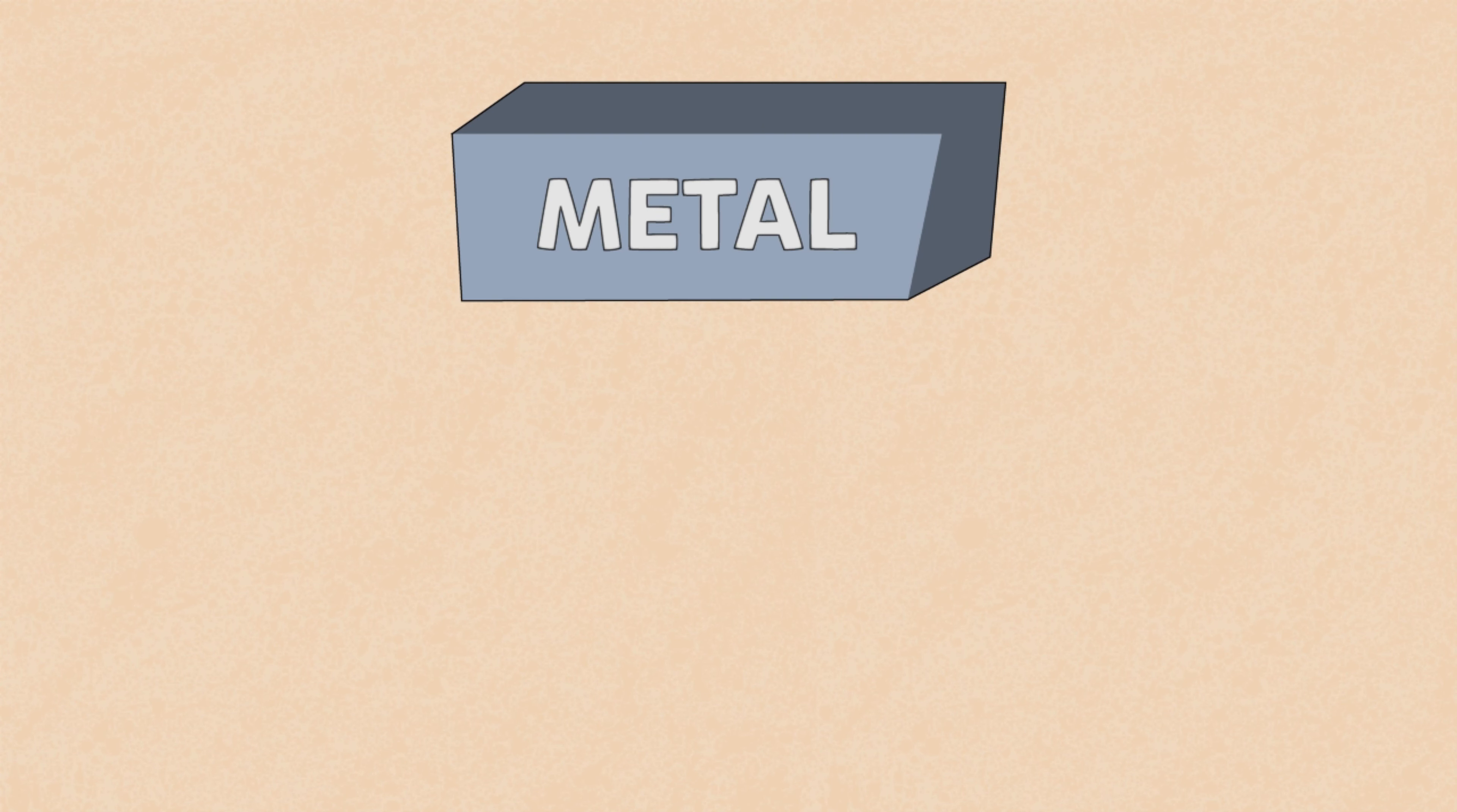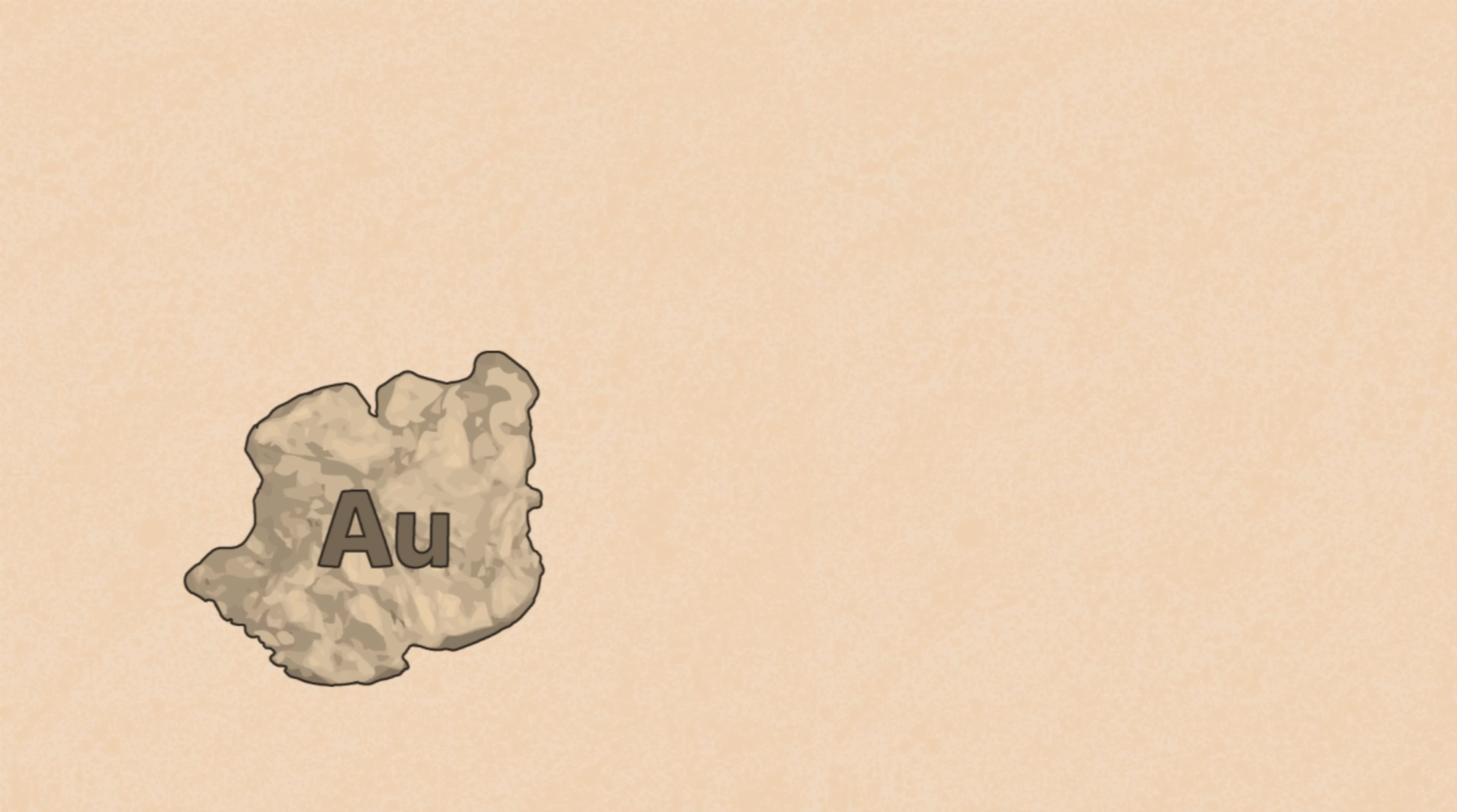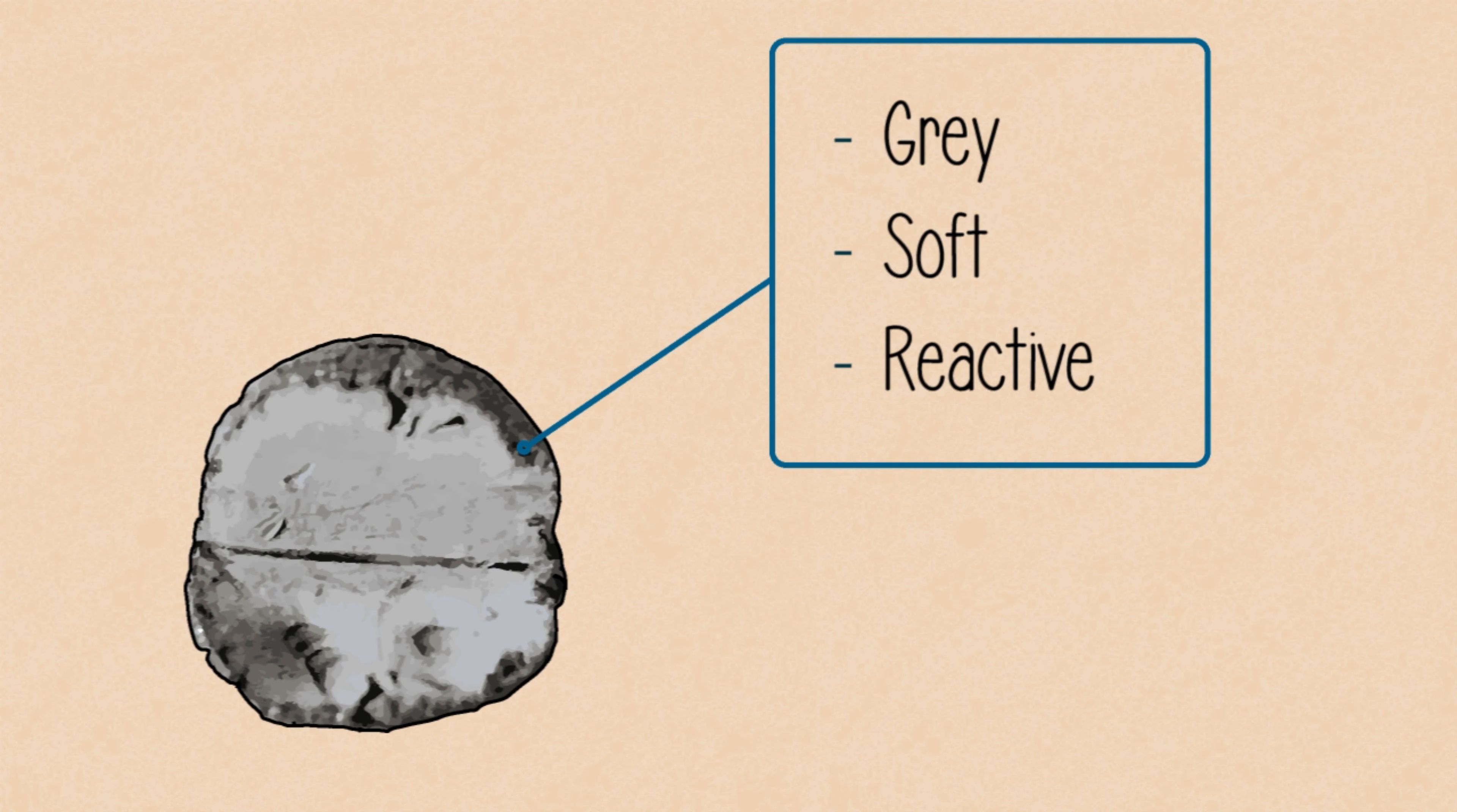Metals can vary greatly from one another in terms of their appearance, properties, uses, and reactivity. Gold, as an example, is yellow, relatively hard, and very unreactive. Potassium, on the other hand, is grey, relatively soft, and reacts vigorously with oxygen and water.